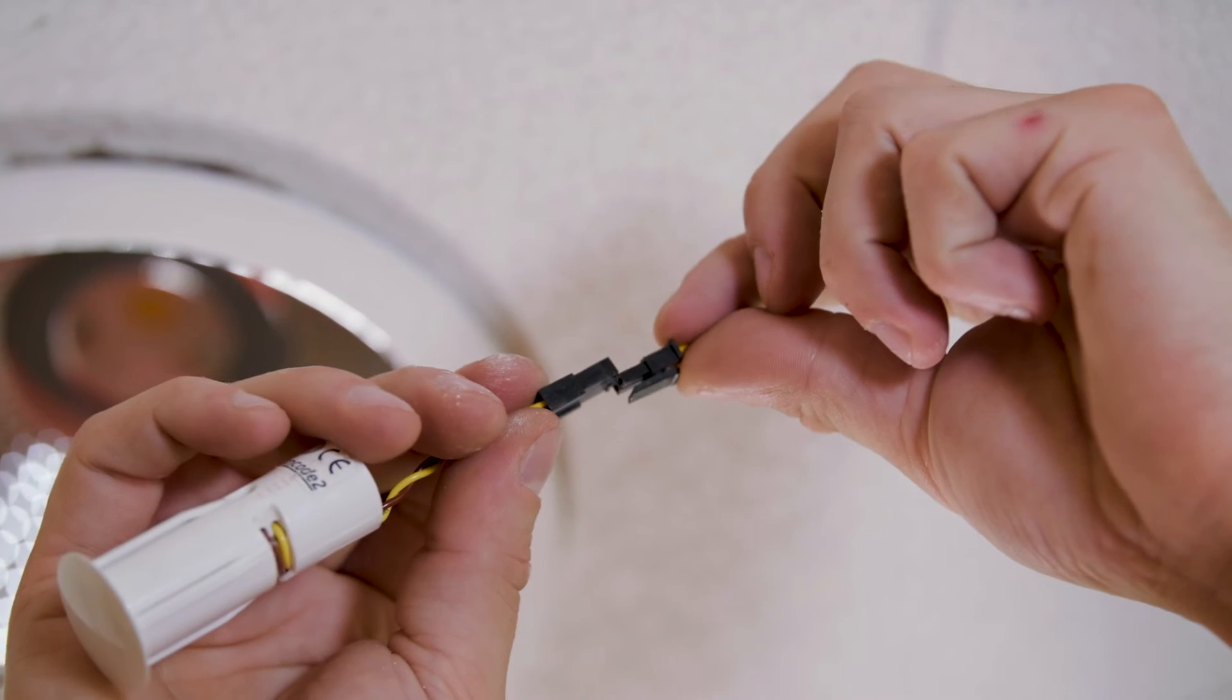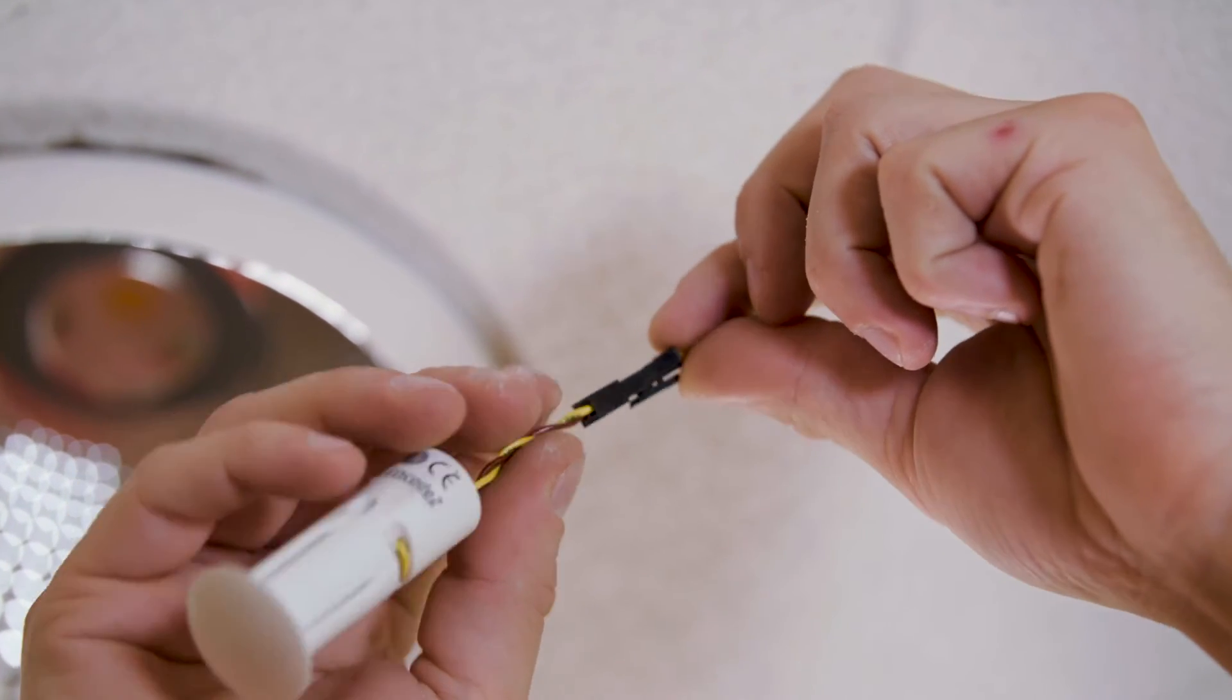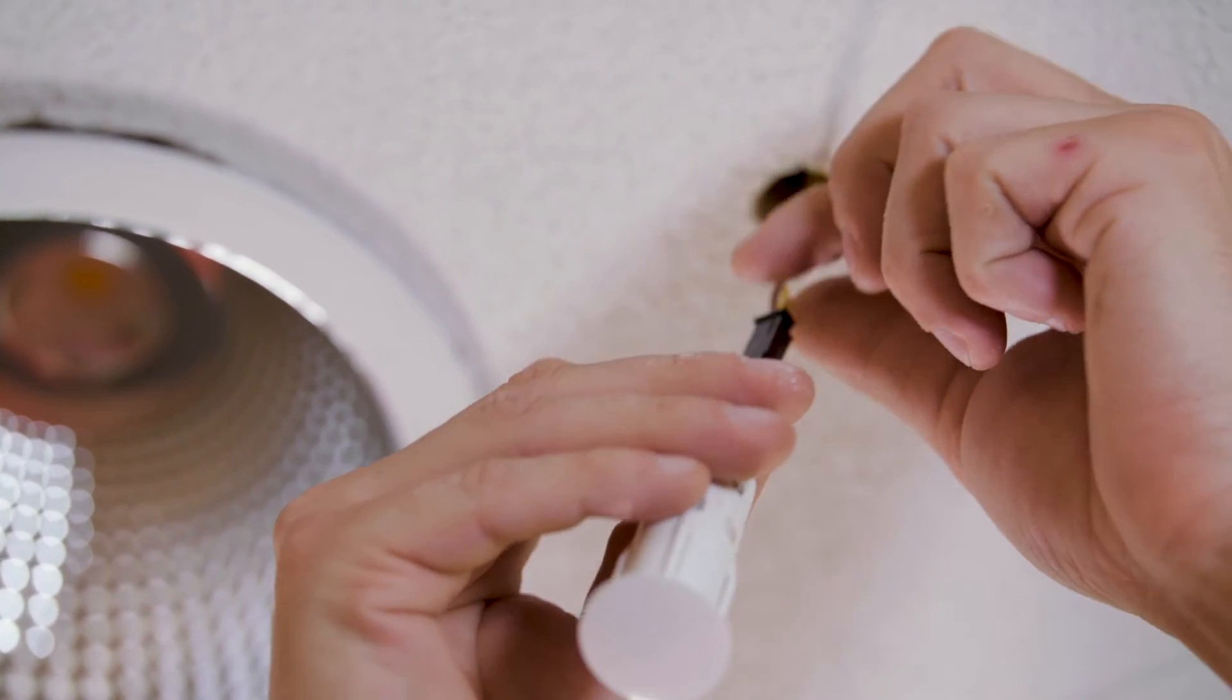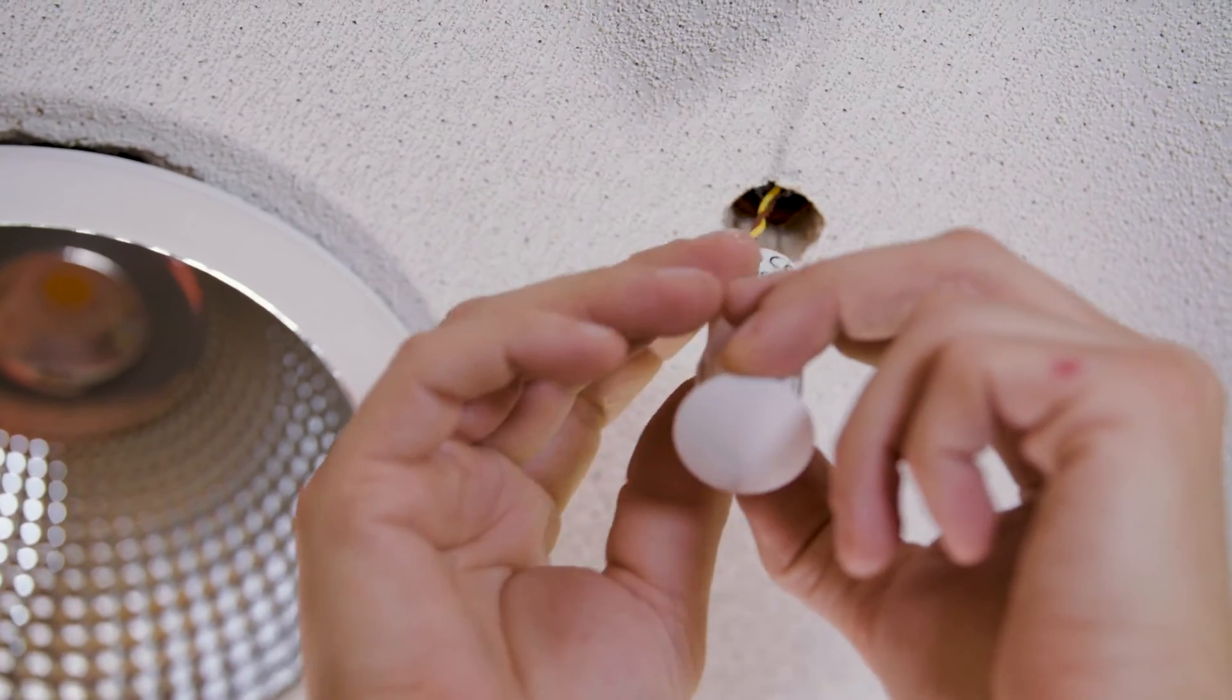Unpack the LEDCODE BLE radio and connect the LEDCODE wiring to the LED driver and push the radio into the ceiling.